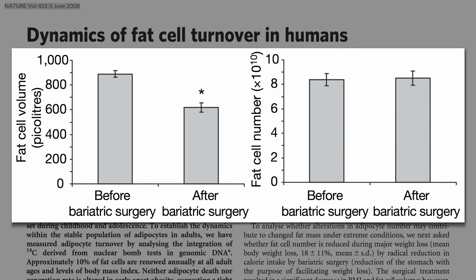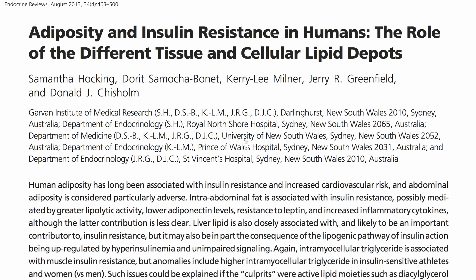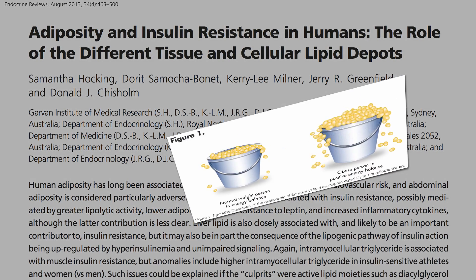Conversely, when we gain weight, our fat cells just stretch as we pack more and more fat into each individual fat cell. So when our belly or thighs get big, we're not adding more fat cells — we're just cramming more fat into each cell. And at a certain point, our fat cells become so bloated that they spill fat back into the bloodstream. This is an illustration of the so-called spillover effect.